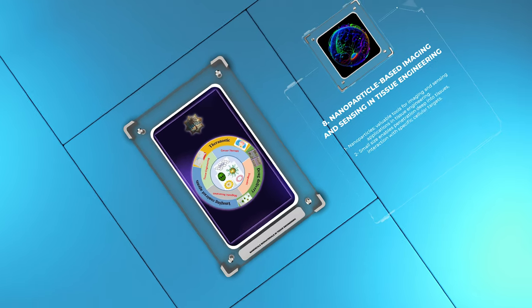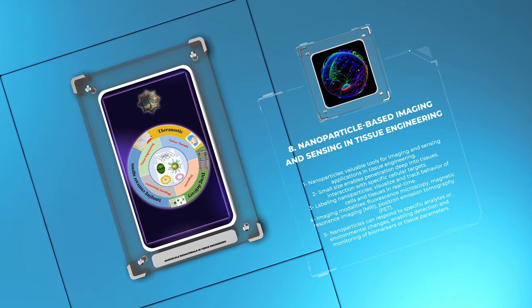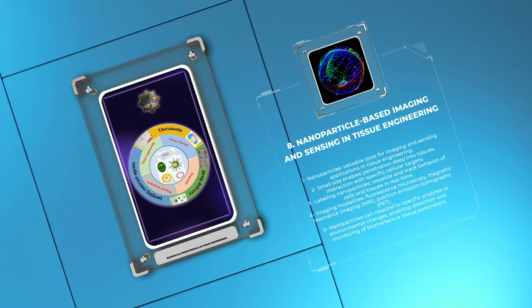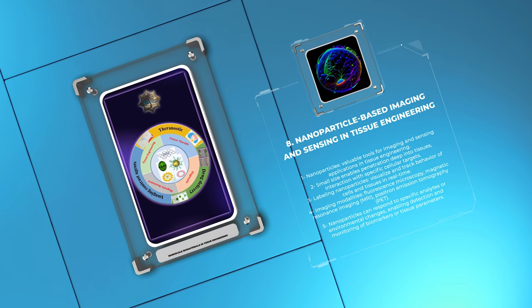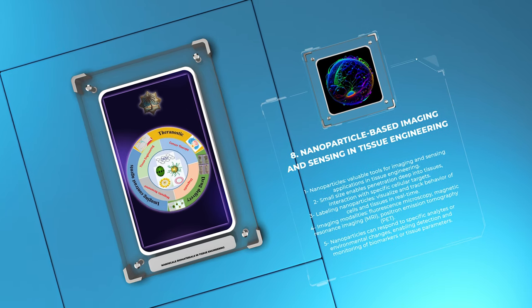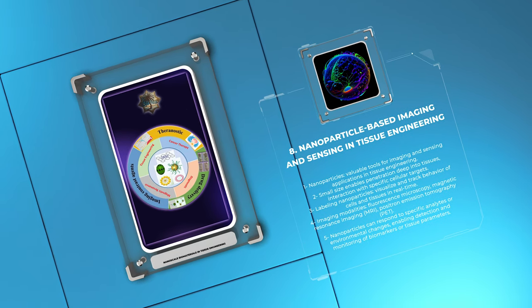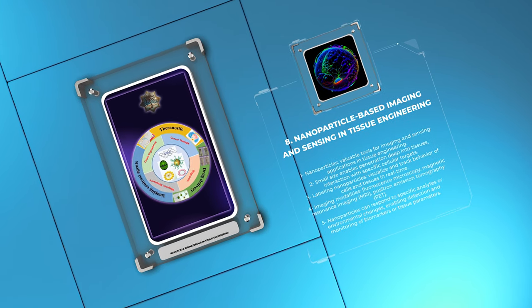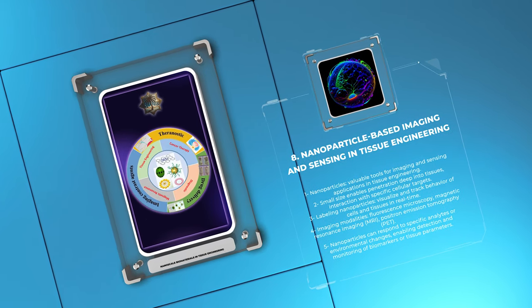Nanoparticles have emerged as valuable tools for imaging and sensing applications in tissue engineering. Due to their small size, nanoparticles can penetrate deep into tissues and interact with specific cellular targets. By labeling nanoparticles with fluorescent dyes or contrast agents, we can visualize and track the behavior of cells and tissues in real-time using various imaging modalities, such as fluorescence microscopy, magnetic resonance imaging (MRI), or positron emission tomography (PET). Furthermore, nanoparticles can be engineered to respond to specific analytes or environmental changes, enabling the detection and monitoring of biomarkers or tissue parameters. These imaging and sensing capabilities facilitate the characterization of tissue constructs, assessment of their functionality, and evaluation of their response to external stimuli or therapeutic interventions.